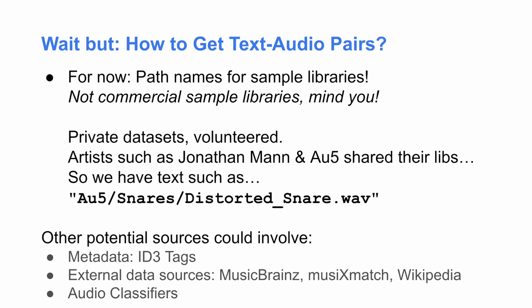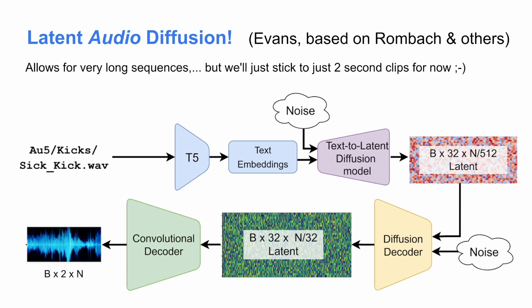One place text-audio pairs exist in large numbers is in path names for sample libraries or other types of audio. We're not talking about scraping through commercial sample libraries — these are all private datasets volunteered by people like Jonathan Mann and AU5 and other artists. So you'll have text that really just looks like a long path name, and we train the model on that. You could also grab metadata from ID3 tags, other datasets, or an audio classifier. The central insight of Evans's latent audio diffusion is really based on Robin Rombach's Stable Diffusion work: take our text, encode it to get text embeddings, and produce something like a spectrogram in a 32-dimensional latent vector space. The time dimension N is reduced by a factor of 512, and the two channels handle stereo.